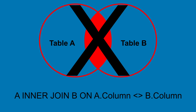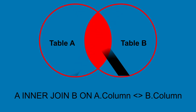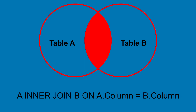Moreover, even for equality joins — equi-joins for short — the diagram is wrong, because the intersect operator results in a set which consists of unique elements. However, the result of a SQL equi-join includes the common elements from both A and B, and the diagram fails to portray that.